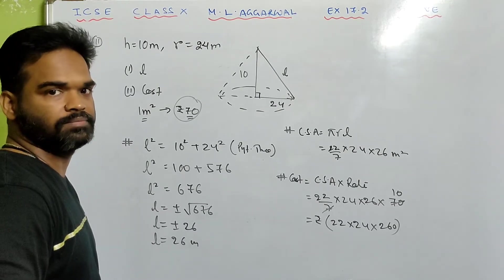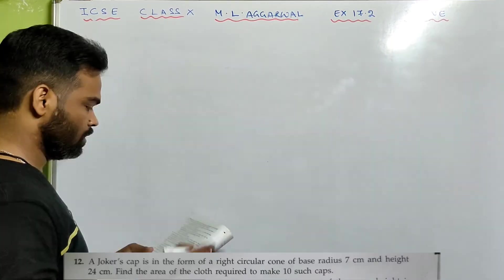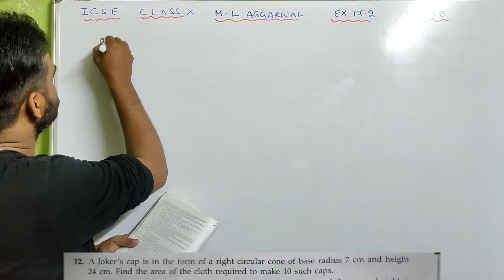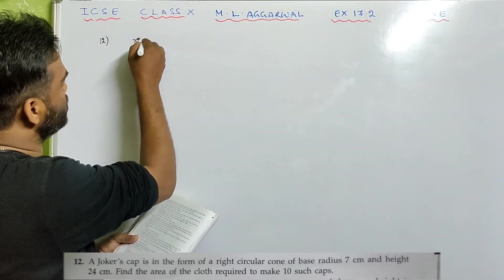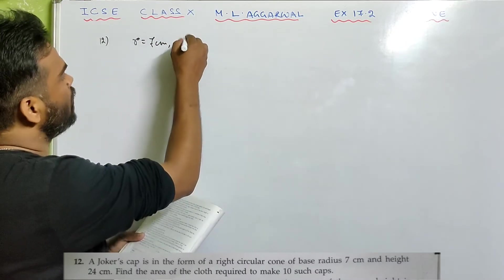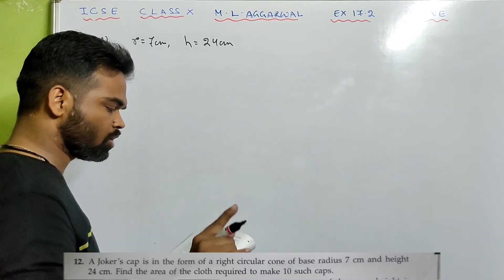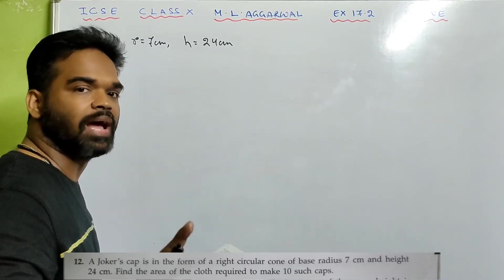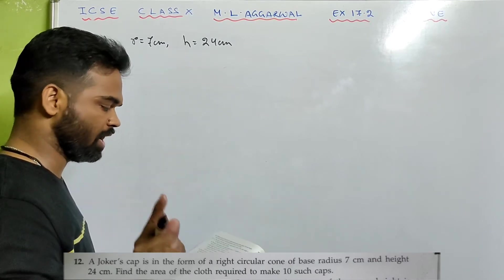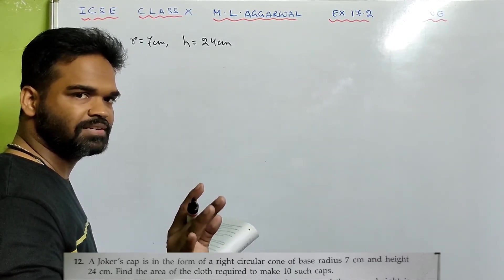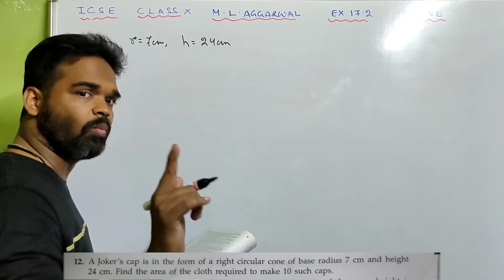The concept should be clear. Sum number 12: A joker's cap is in the form of a right circular cone of base radius 7 centimeter and height 24 centimeter. Find the area of cloth required to make 10 such caps. Area of cloth required means we are talking about curved surface area.